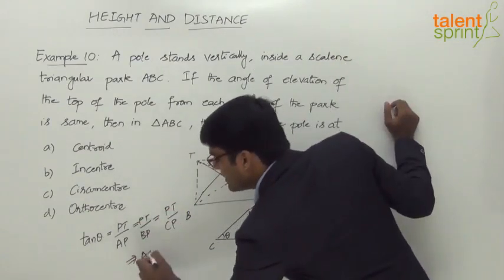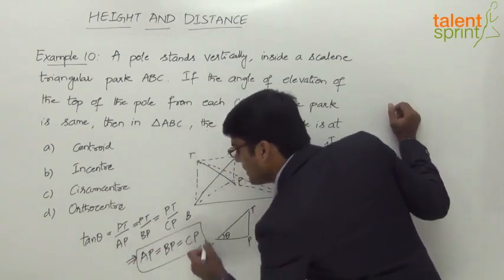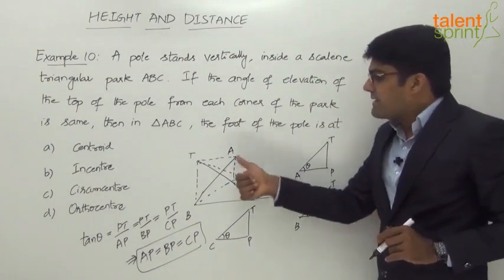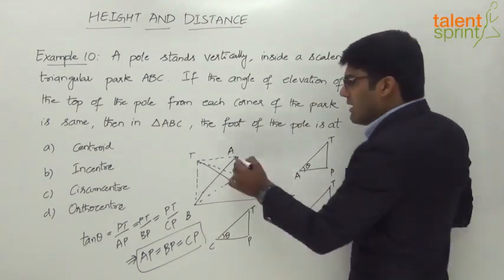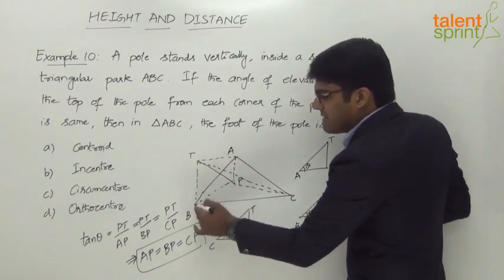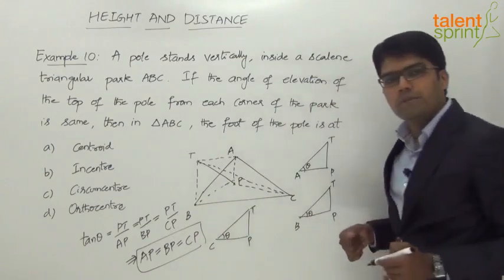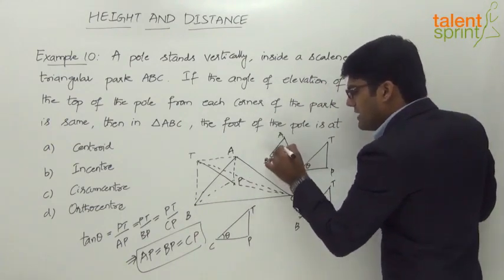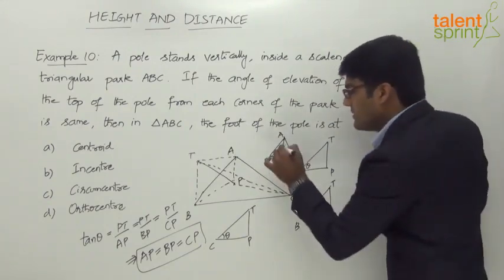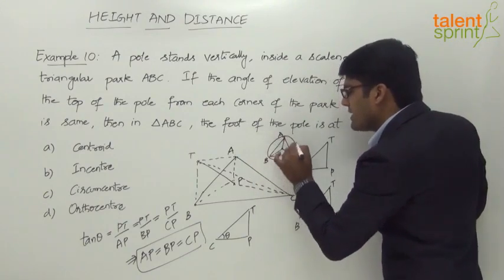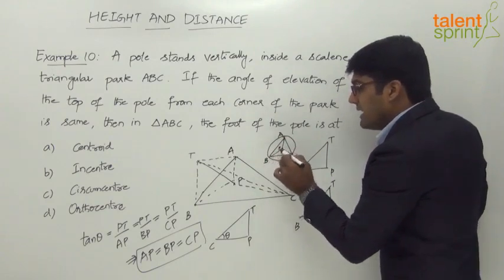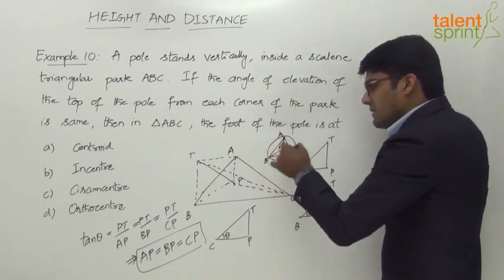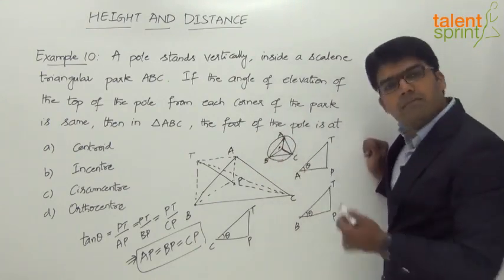The conclusion is that AP = BP = CP. These are the distances from the vertices A, B, and C to the foot of the pole P. When a point inside a triangle is equidistant from all three vertices, that point is the circumcenter. Taking P as the center and drawing a circle, it will touch all three vertices A, B, and C — which is only possible when P is the circumcenter. So AP, BP, and CP are all equal to the circumradius.